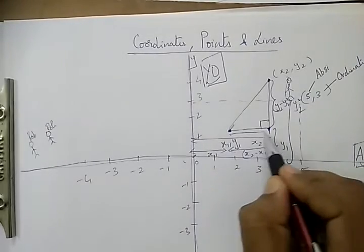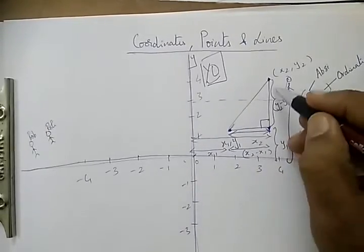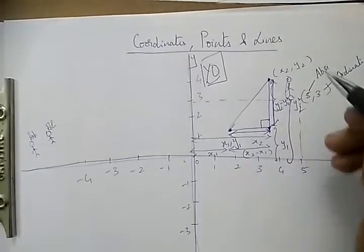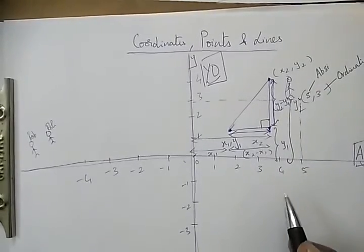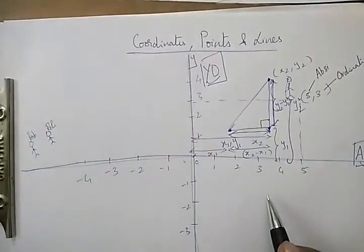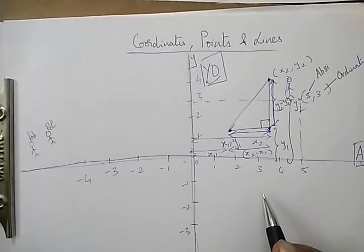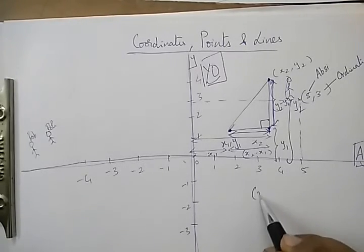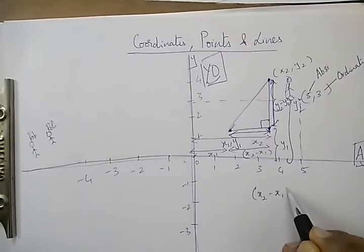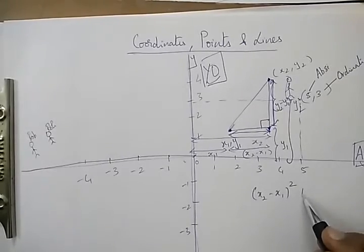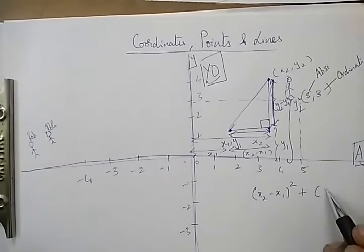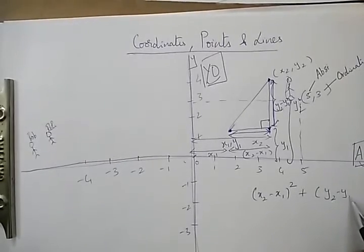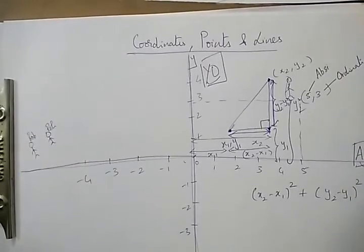This is a right-angle triangle. This part is x₂ minus x₁, and this part is y₂ minus y₁. We all know the Pythagoras theorem. Pythagoras theorem says that the sum of the squares of the sides is equal to the square of the hypotenuse.